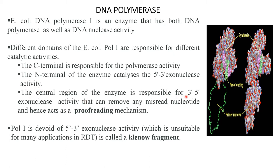The central region of the enzyme is responsible for 3' to 5' exonuclease activity that can remove any misread nucleotide, and hence acts as a proofreading mechanism. The portion of Pol I that is devoid of 5' to 3' exonuclease activity, which is unsuitable for many applications in recombinant DNA technology, is called the Klenow fragment.